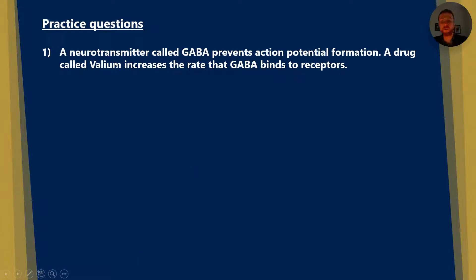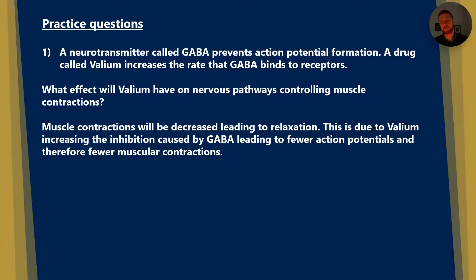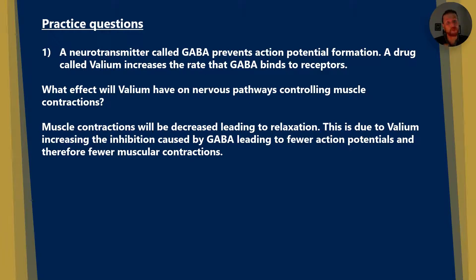Question one: A neurotransmitter called GABA prevents action potential formation. A drug called Valium increases the rate that GABA binds to receptors. What effect will Valium have on nervous pathways controlling muscle contractions? The answer is that muscle contractions will be decreased, leading to relaxation. This is due to Valium increasing the inhibition caused by GABA, leading to fewer action potentials and therefore fewer muscle contractions.